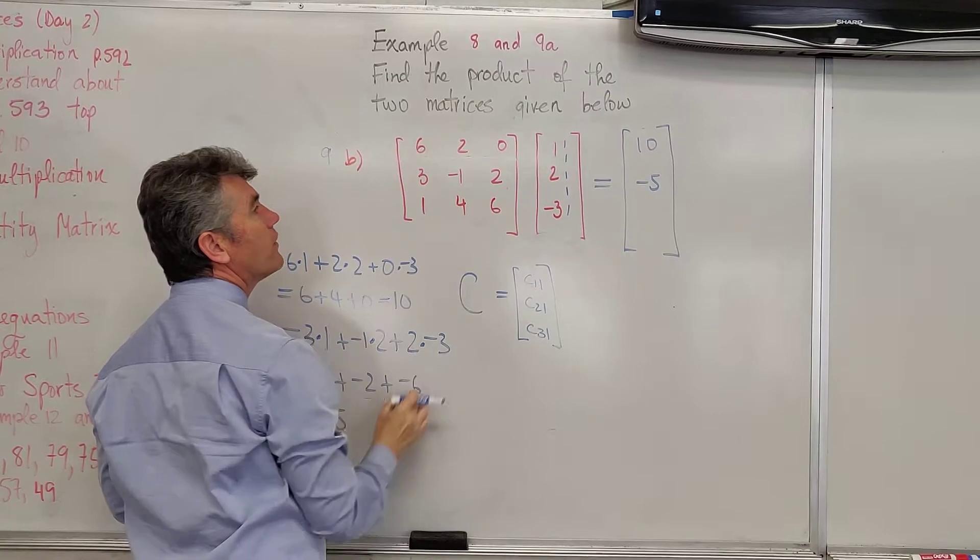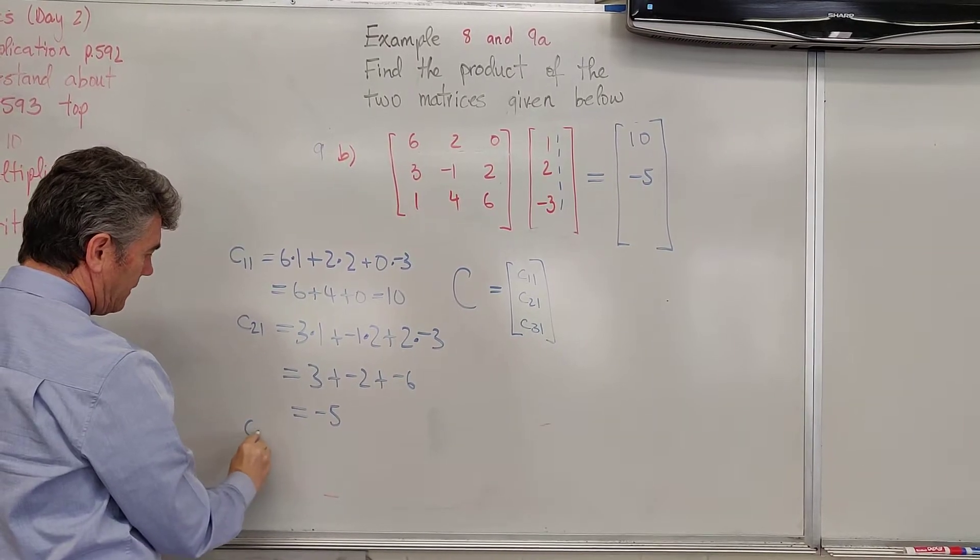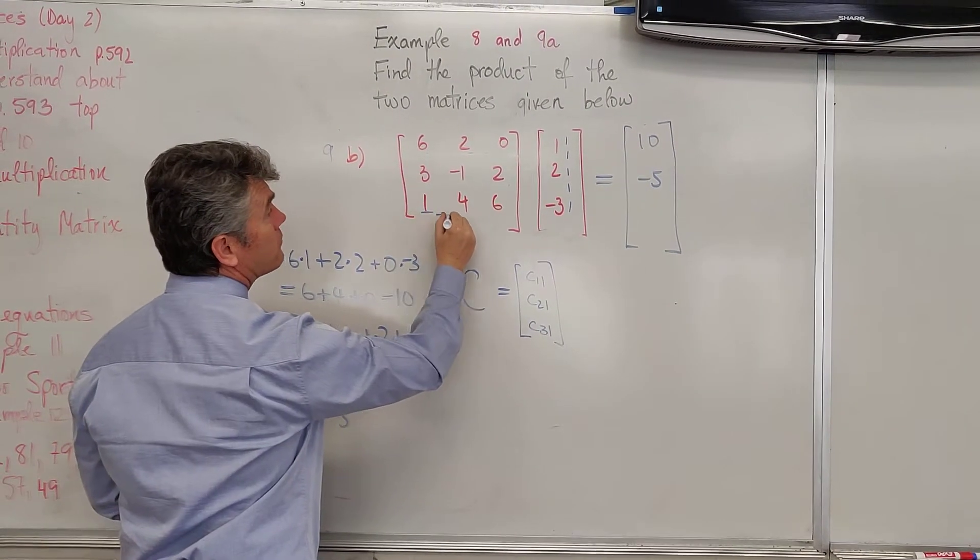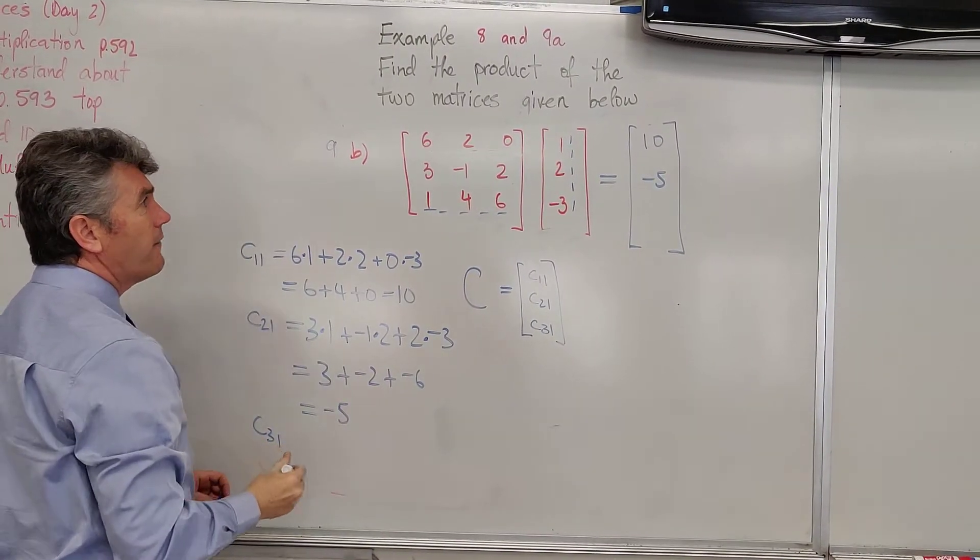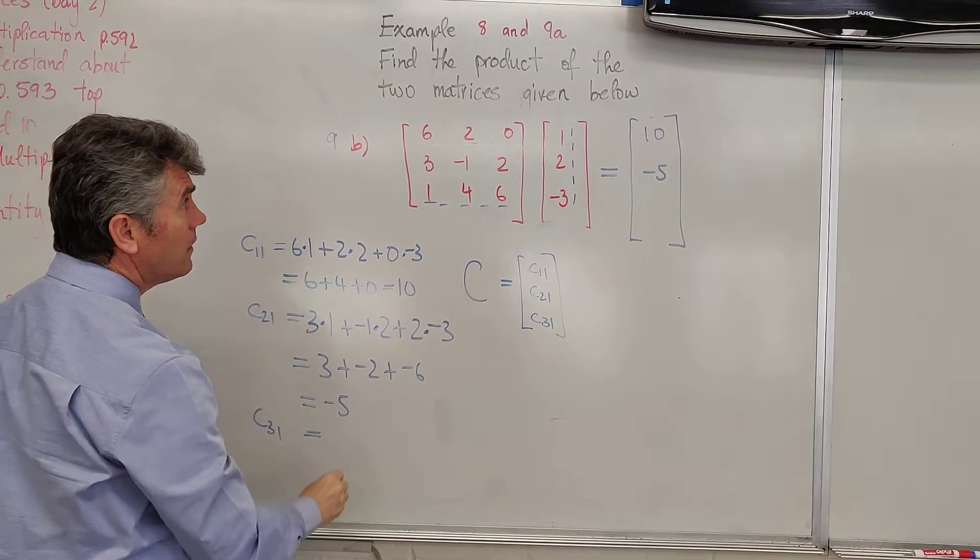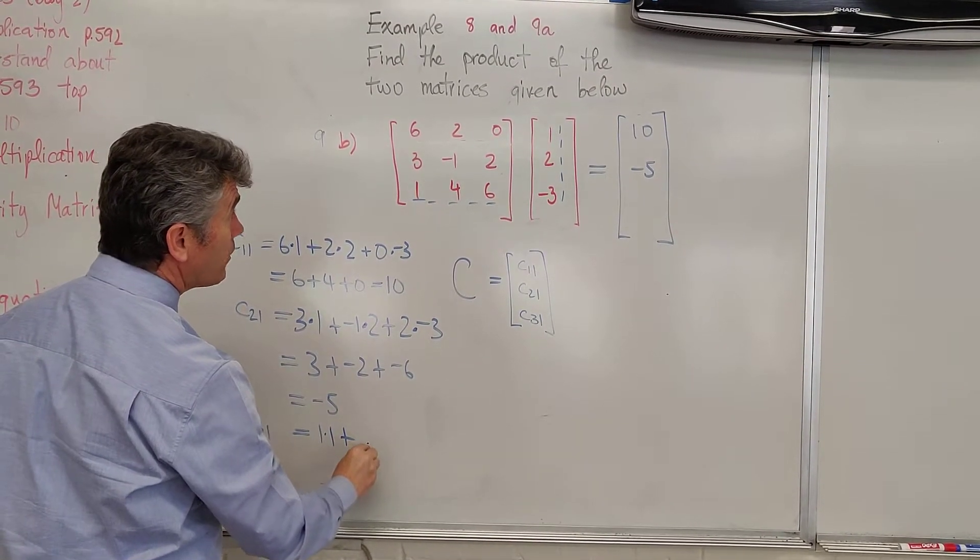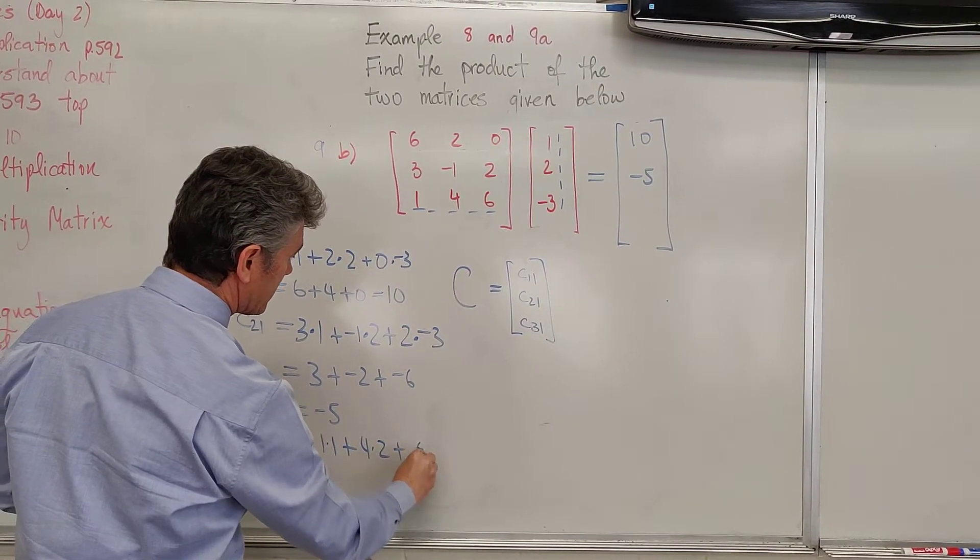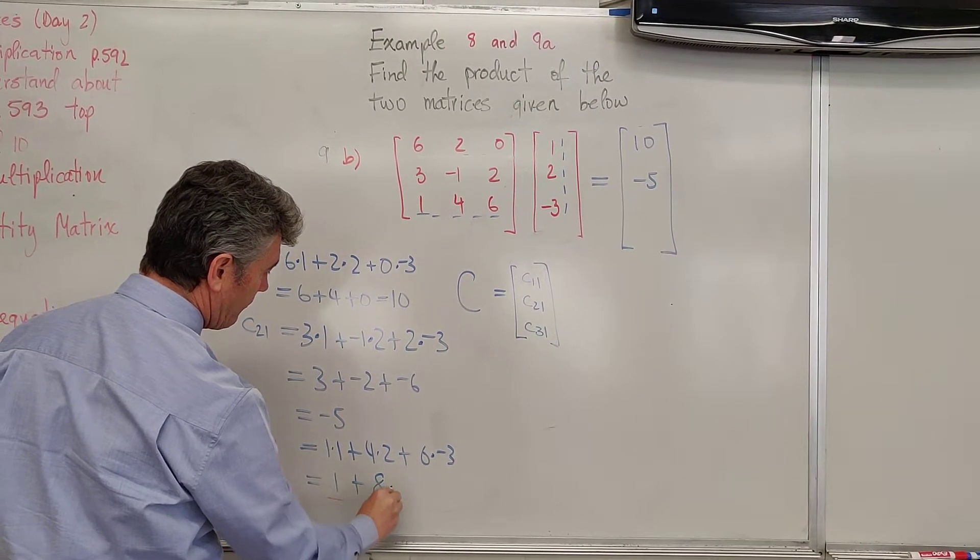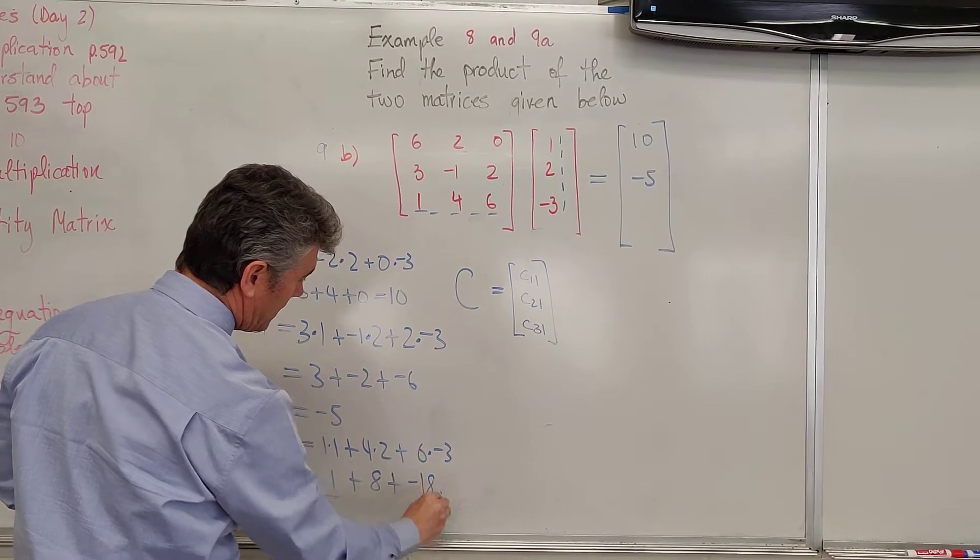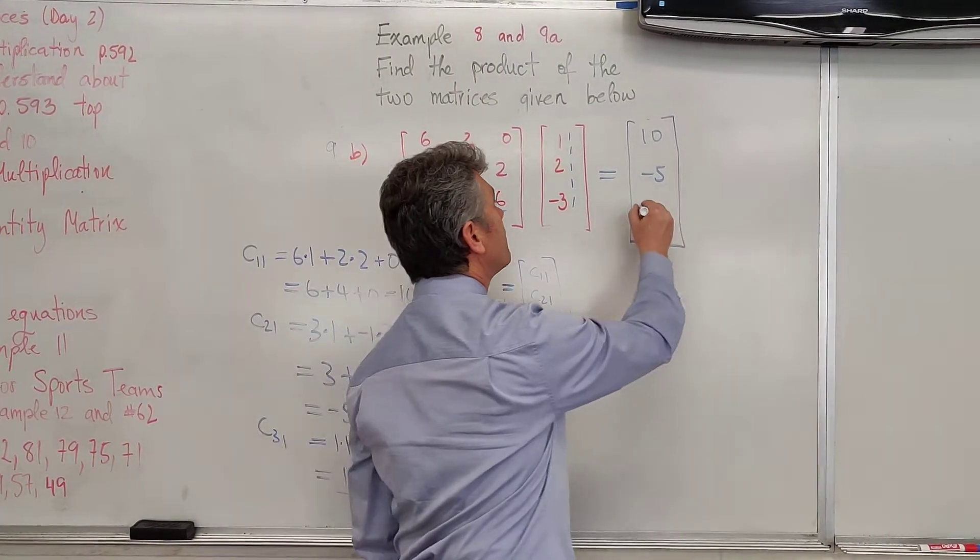Finally, we're going to find the entry in the third row, first column. So, we're going to use third row from the matrix on the right, the only column from the matrix on the left. And again, the product of the first entries, 1 times 1, plus middle entries, 4 times 2, plus 6 times negative 3. Find their sum, 1 plus 8, plus negative 18. This is 9 plus negative 18, negative 9.